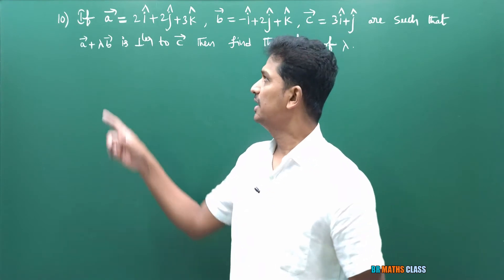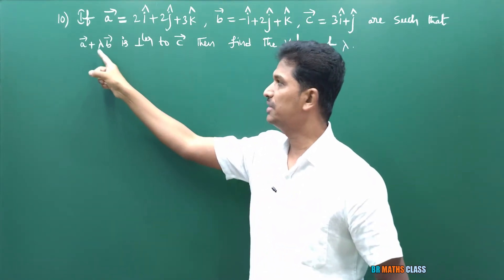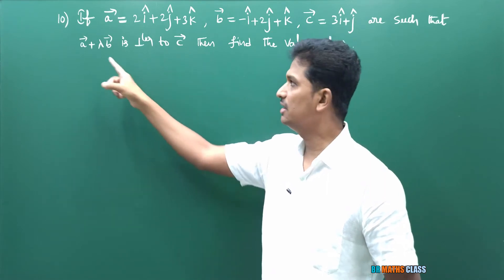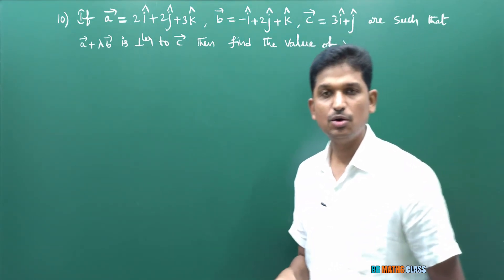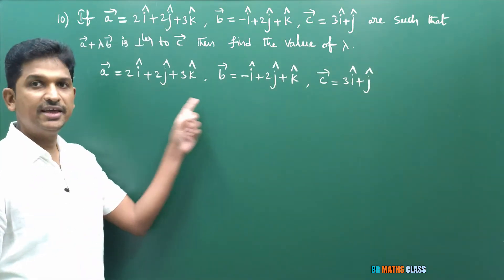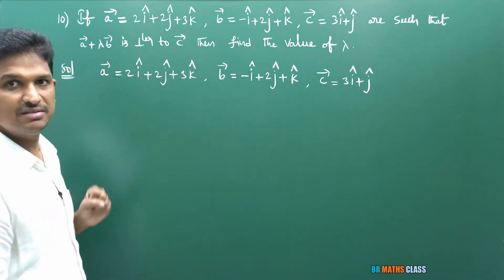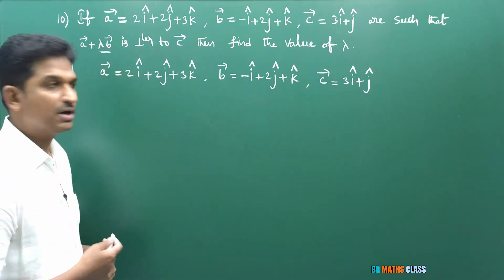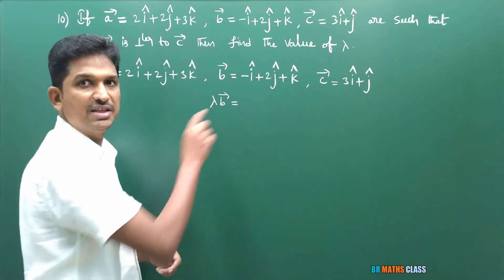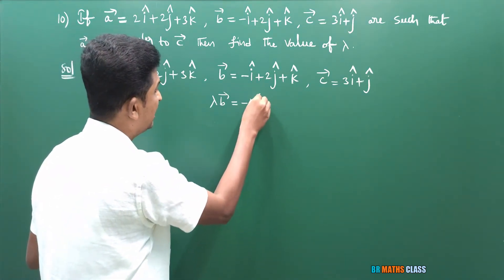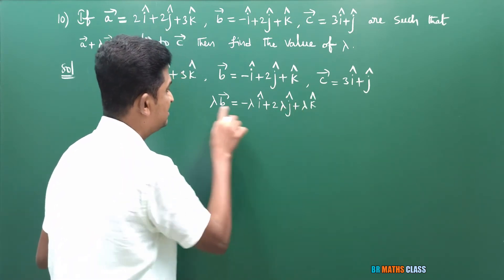You observe question number 10. Three vectors a̅, b̅, c̅ are given such that (a̅ + λb̅) is perpendicular to c̅. Find the value of λ. I will first calculate λb̅ by multiplying each element of b̅ by λ, giving −λî + 2λĵ + λk̂.